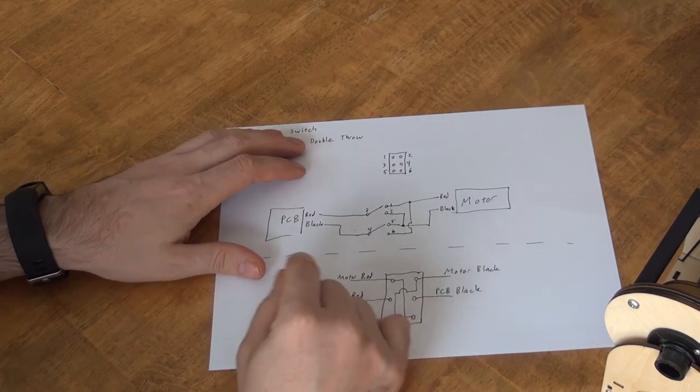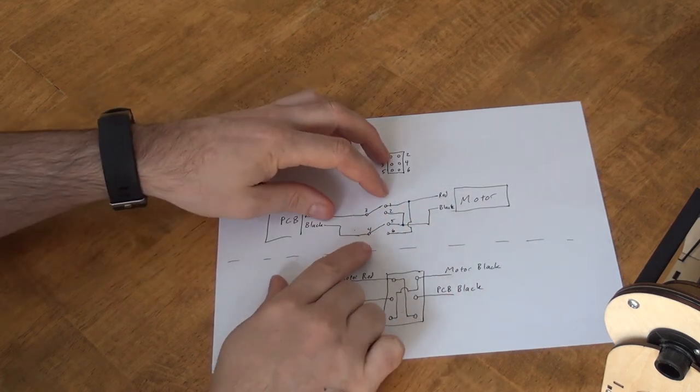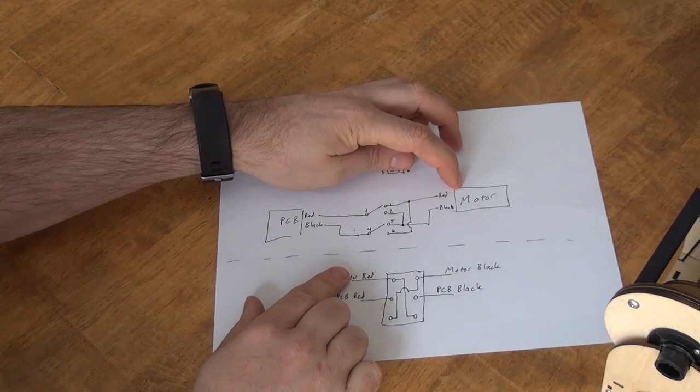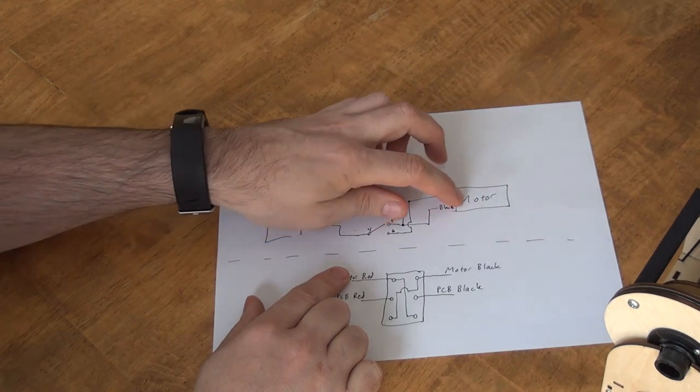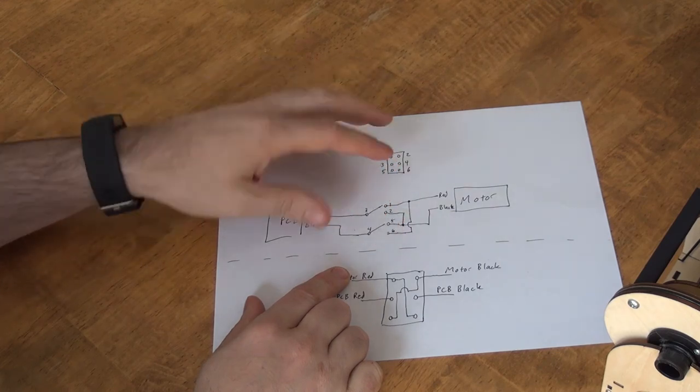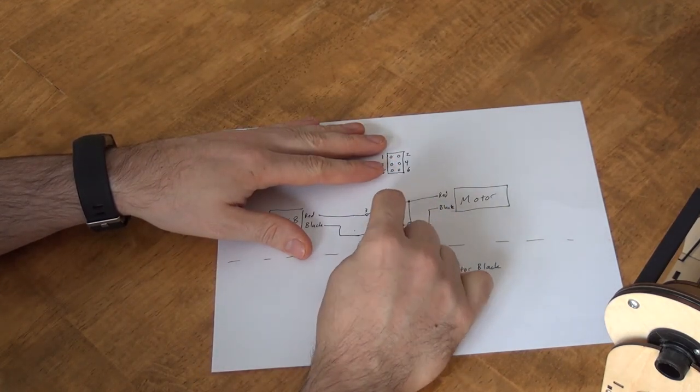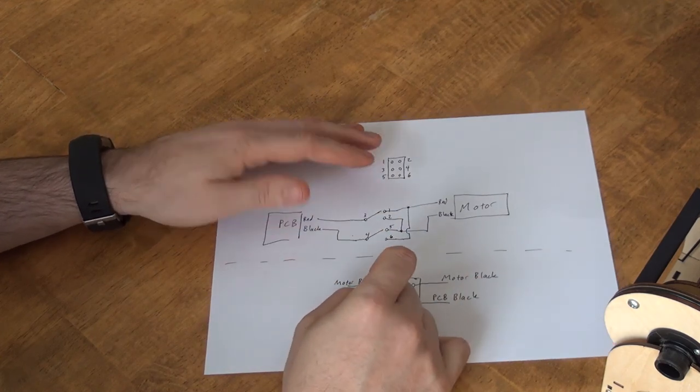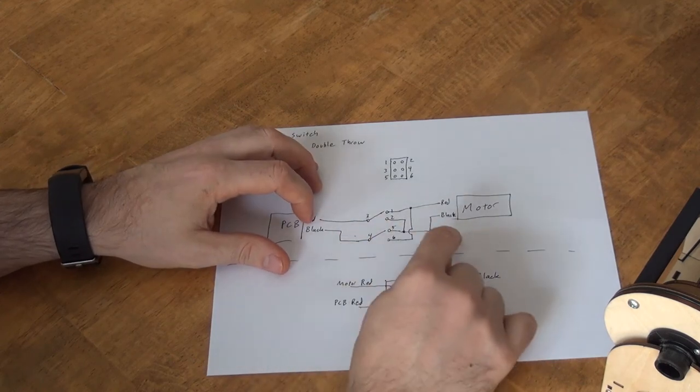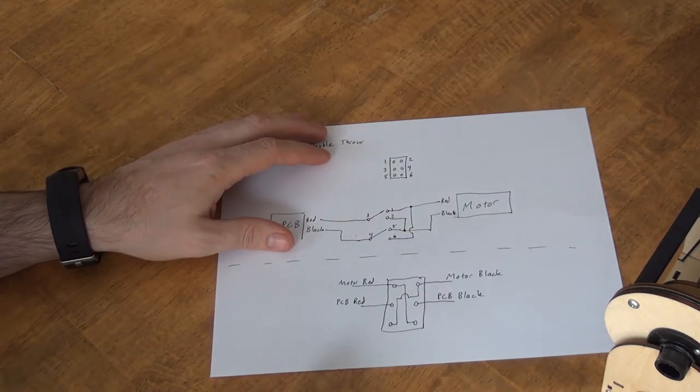So what's basically happening is you have the red wire connected from the circuit board to the motor and the black wire connected from the motor to the circuit board. And then when you flip the switch I have these extra wires that are sort of swapping the direction of them so that you basically have red going to the black and black going to the red, and that's what switches the motor direction with this switch.